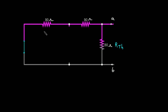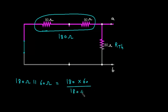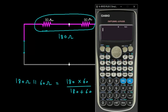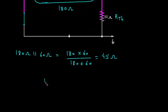Here we can see this 90 ohm and this 90 ohm are connected in series, so this will be 180 ohm. Now this 180 ohm is in parallel with 60 ohm, so it is 180 multiplied by 60 divided by 180 plus 60, which equals 45 ohm. So RTH is equal to 45 ohm.